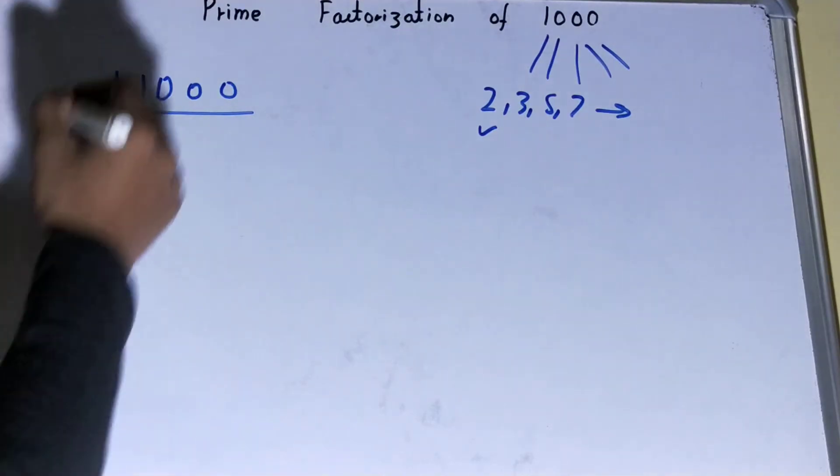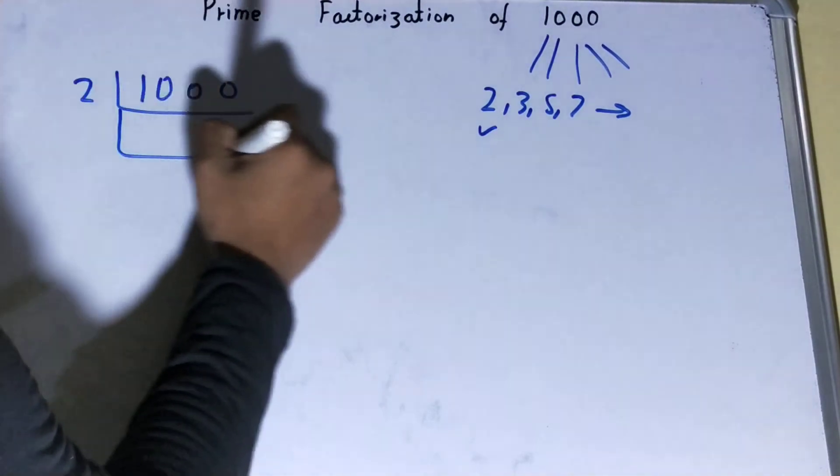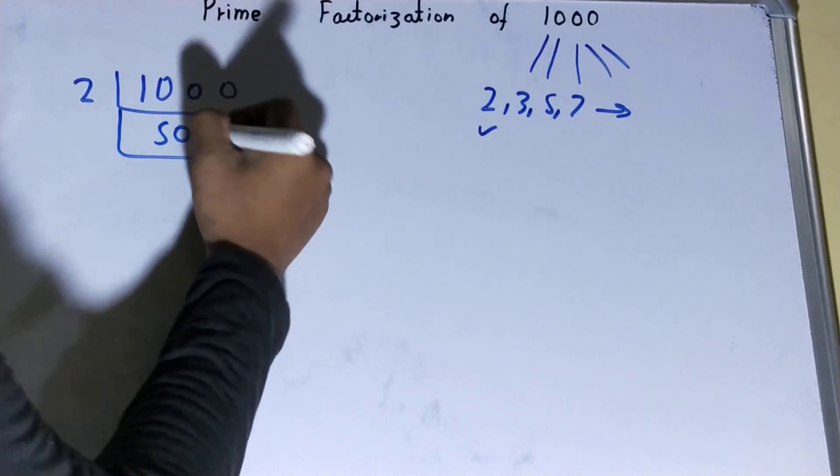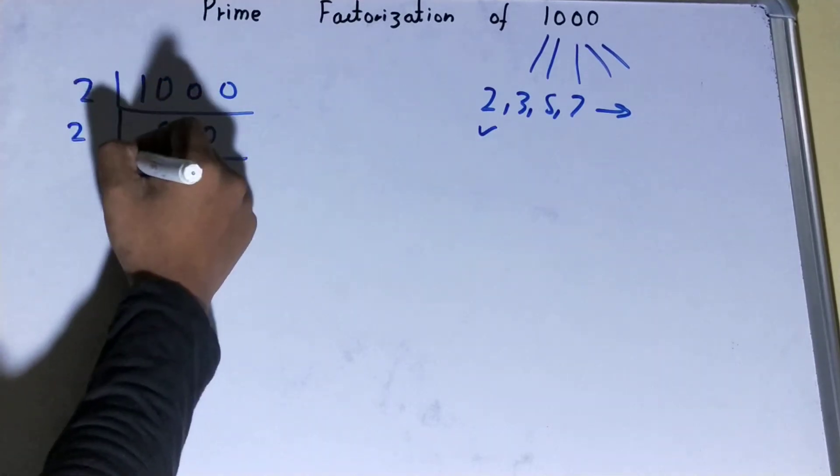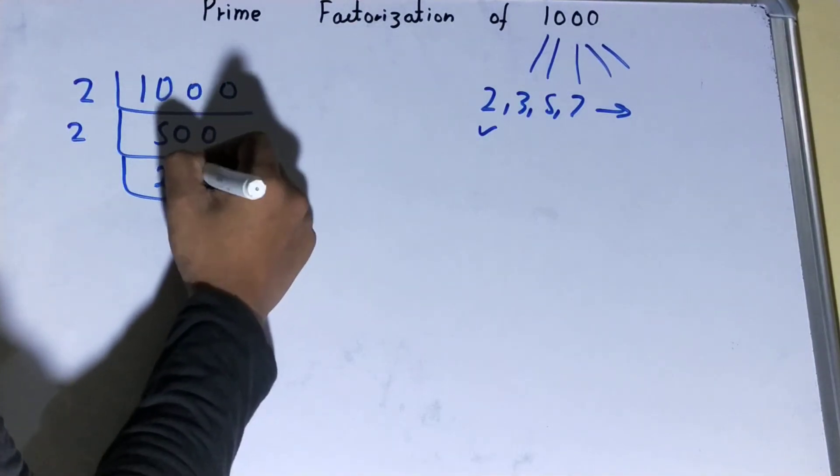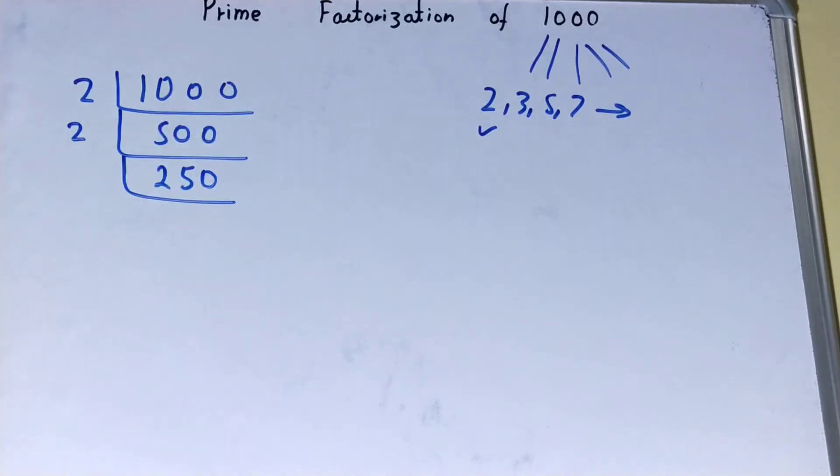Next, again same process you need to repeat. Is this 500 divisible by 2? It is divisible, so divide it and you'll be left with 250. Again, same process. Is this 250 divisible by 2? Yes it is, so divide it and you'll be left with 125.